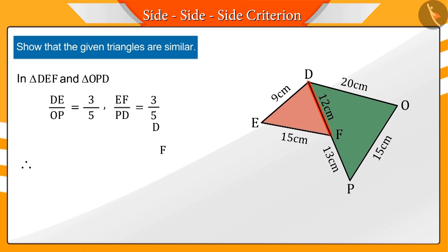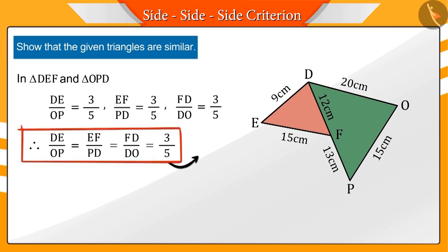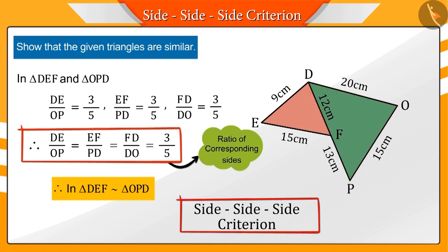Similarly, the ratio of FD and DO also comes out to be equal to this value. Hence, we can say that triangles DEF and OPD are similar by the SSS criteria.